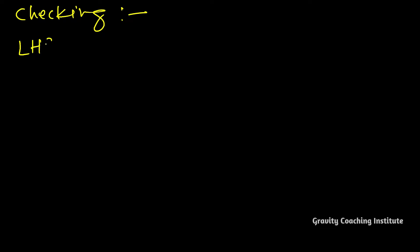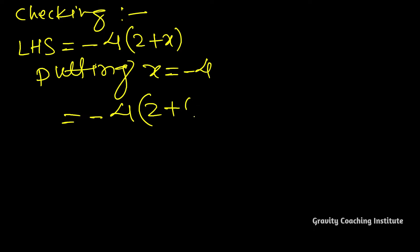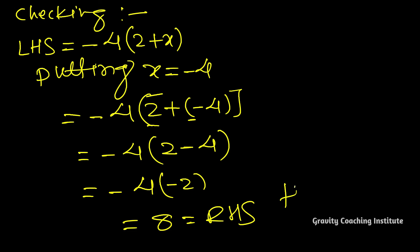Checking: LHS = -4(2 + x). Putting x = -4: = -4(2 + (-4)). First open the bracket, we get 2 - 4 = -2. Then -4 times -2 equals 8, which equals RHS. Hence verified.